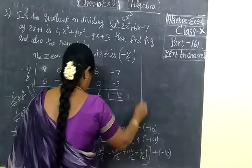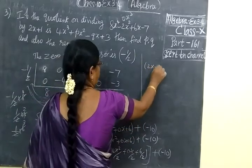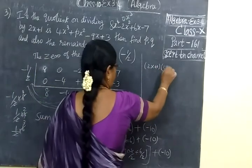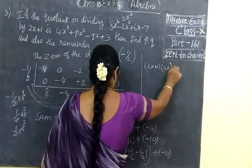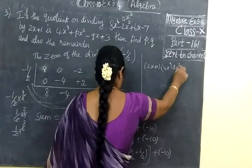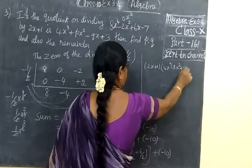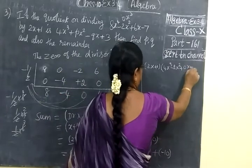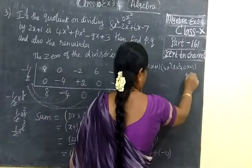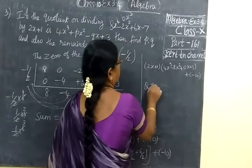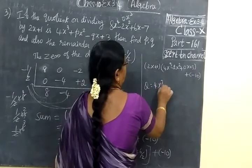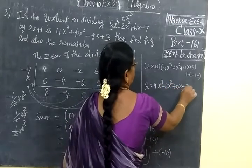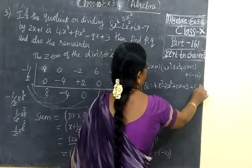So if you cancel you are getting 4x cube minus 10, minus 2x squared plus 0, plus 3. Then remainder is minus 10. So quotient 4x cube minus 2x squared plus 0x plus 3, and this remainder is minus 10.